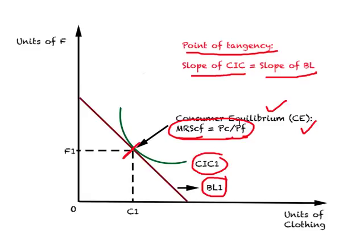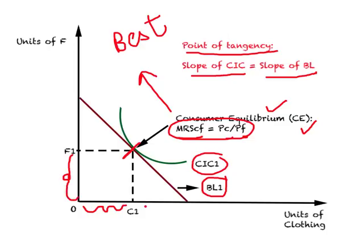Consumer equilibrium is the best point for the community in terms of consumption choices, and since it is the best point, this is where all consumers will be. Dropping this point to the horizontal axis gives us OC1 — the quantity of clothing consumed by this country. Taking this point to the vertical axis gives us OF1 — the quantity of food consumed. So OC1 and OF1 represent the exact quantities of clothing and food this country will consume, given the budget constraint and consumer preferences.